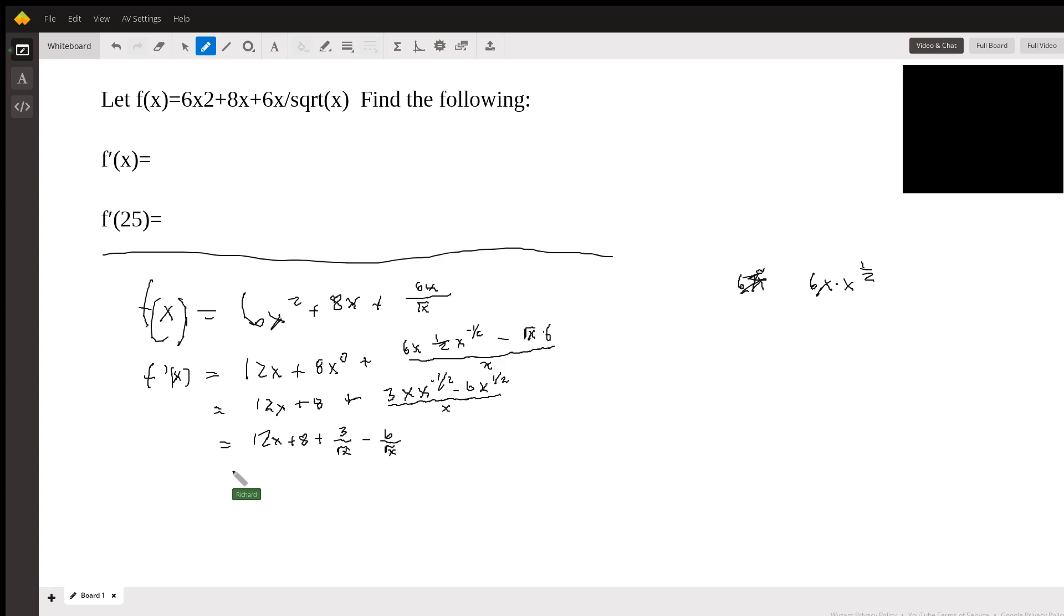So we'll put these back together. So 12x plus 8 plus 3 minus 6 is negative 3. So that's negative 3 over the square root of x. And that's f prime of x.